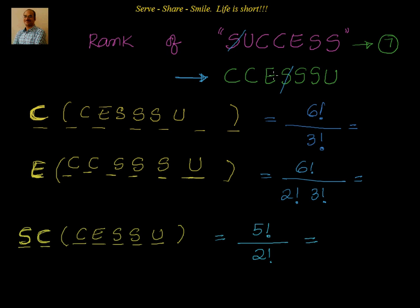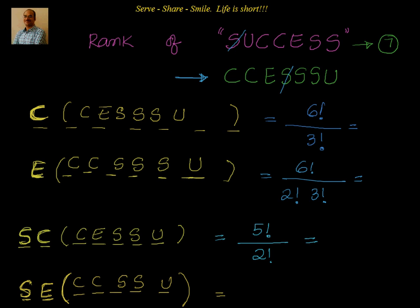After SC, we move to SE. With S and E fixed, the five remaining letters are C, C, S, S, U. The number of arrangements is 5! divided by 2! (two C's) times 2! (two S's), giving 120 divided by 4, which equals 30 words starting with SE. After completing SE, the next group is SS.